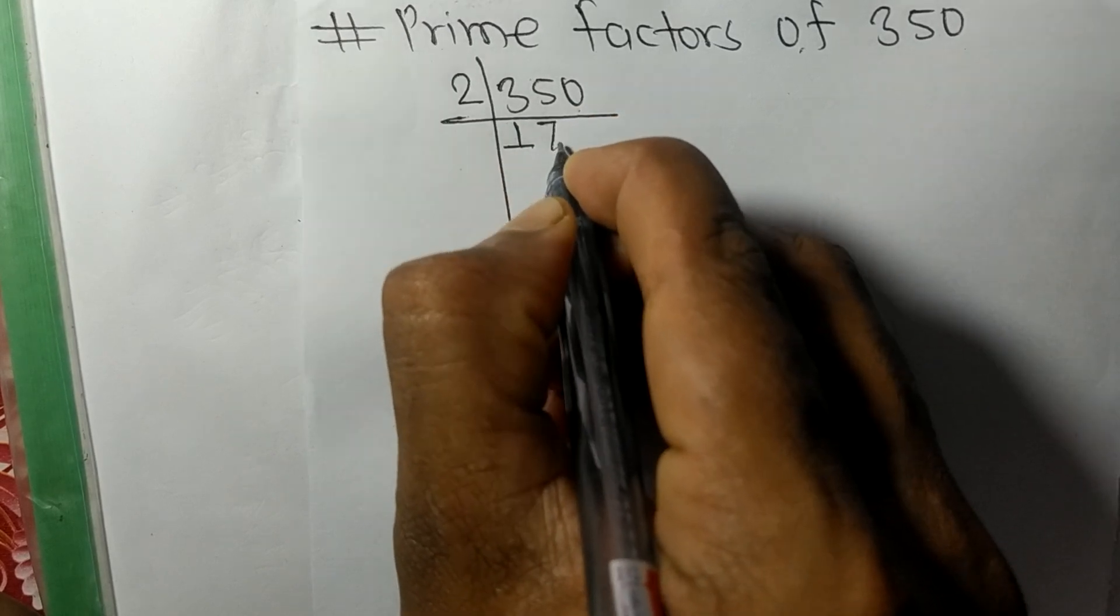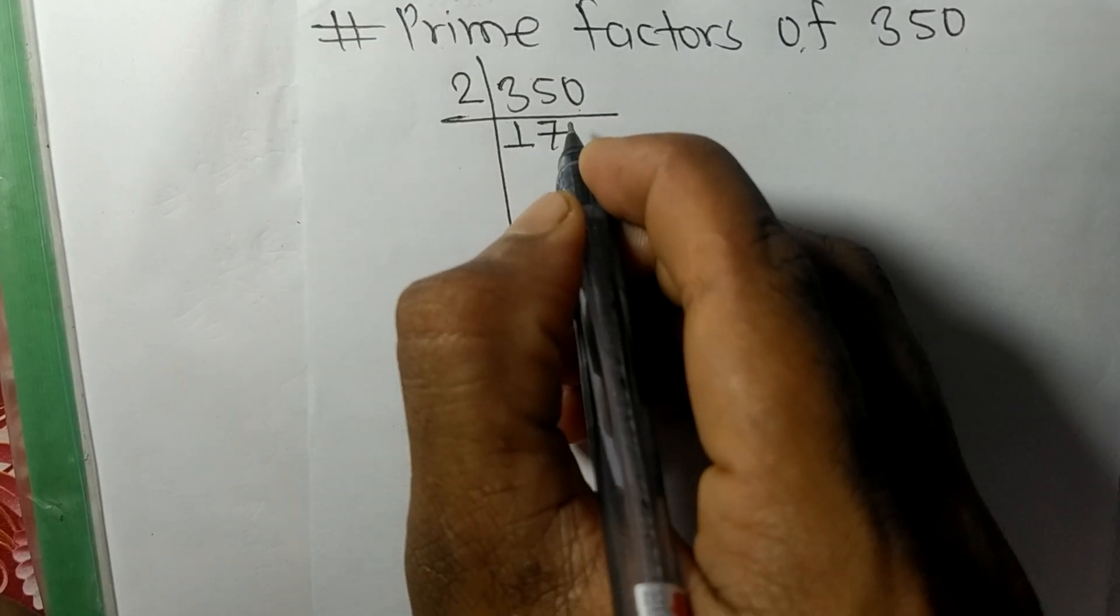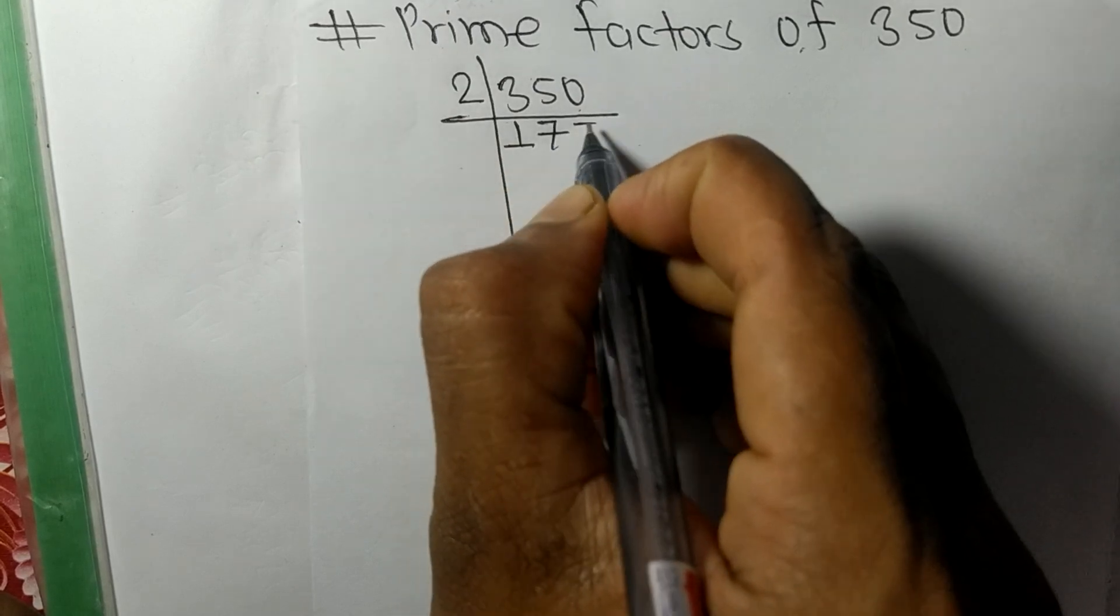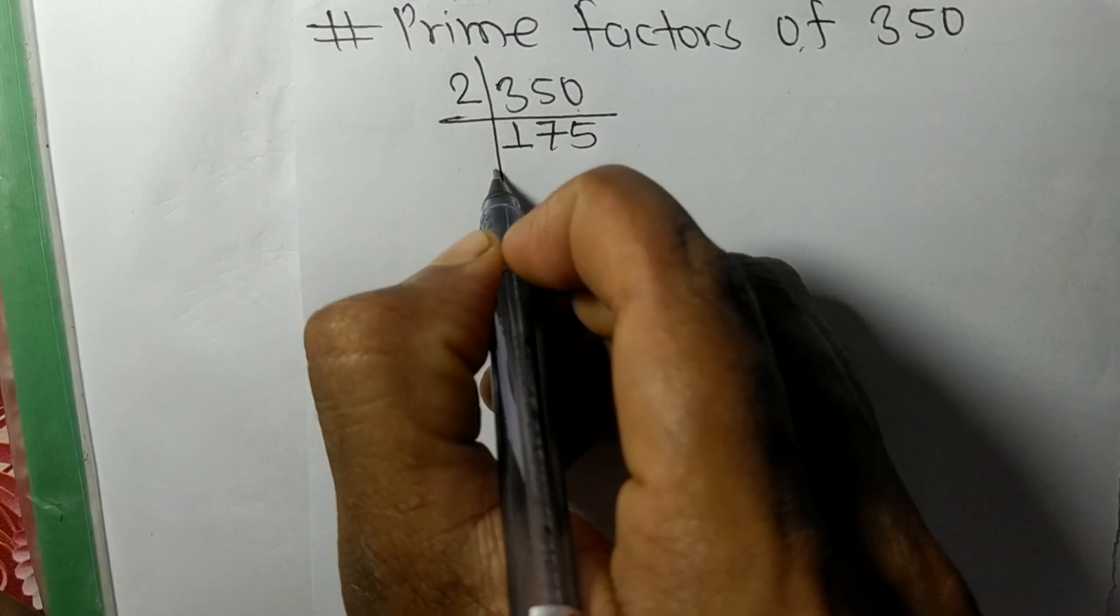15, 2 times 7 is 14 remainder 1, so 1, 0, 10. So 2 times 5 is 10.